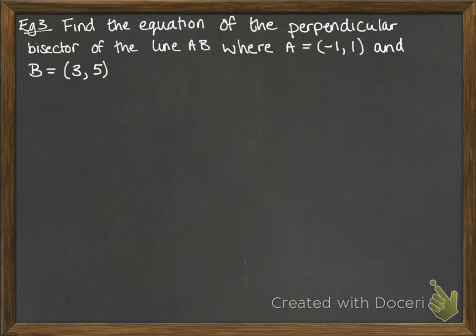And one last example. We're going to find the equation of the perpendicular bisector of the line AB, where A is minus 1, 1 and B is 3, 5. First of all, we need the gradient of that line AB, so we do the change in y over the change in x. One y-coordinate minus the other divided by one x-coordinate minus the other. Make sure you get them in the same order.